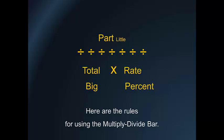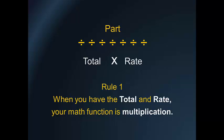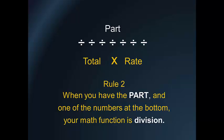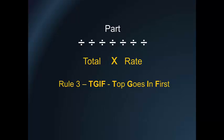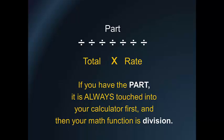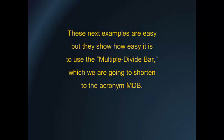Here are the rules for using the multiply-divide bar. Rule 1: When you have the total and the rate, your math function is multiplication. Rule 2: When you have the part and one of the numbers at the bottom, your math function is division. Rule 3: TGIF — Top Goes In First. If you have the part, it is always touched into your calculator first, and then your math function is division. These examples show how easy it is to use the multiply-divide bar, which we will shorten to the acronym MDB.